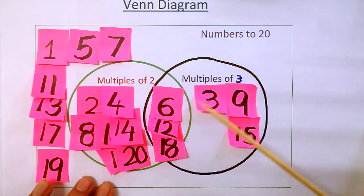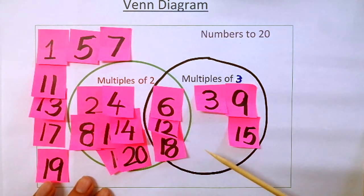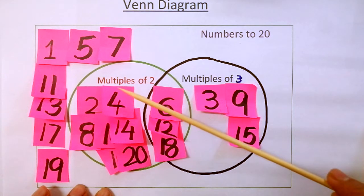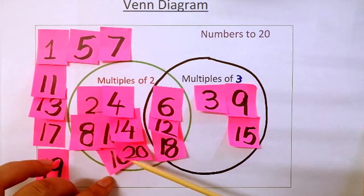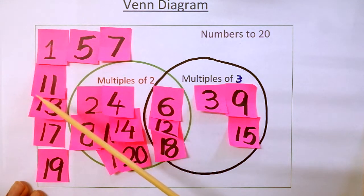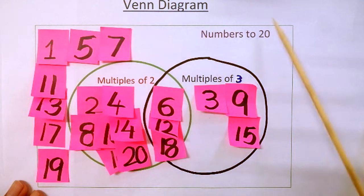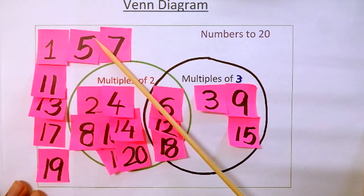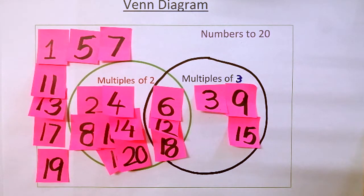Now you can see very clearly: the numbers 3, 9, and 15 are multiples of 3 only. The numbers 6, 12, and 18 are common multiples of 2 and 3 and appear in the overlapping area. The numbers 2, 4, 8, 10, 14, 16, and 20 are multiples of 2 only. The numbers 1, 5, 7, 11, 13, 17, and 19 are not multiples of 2 or 3 but belong to the set, so they remain inside the box but outside the circles. I hope you enjoyed the lesson and understood the concept clearly!